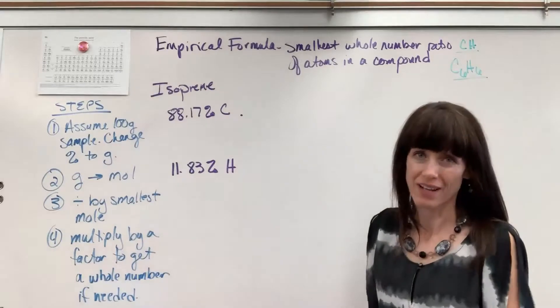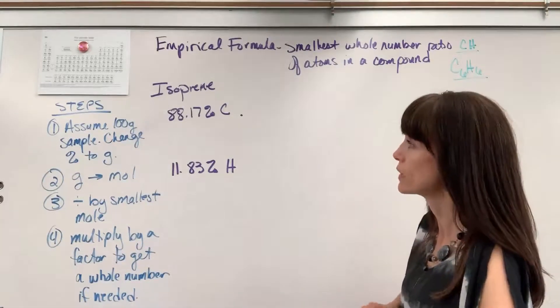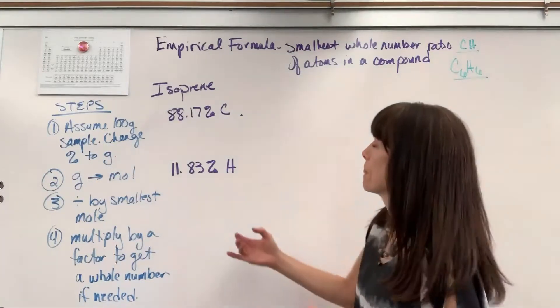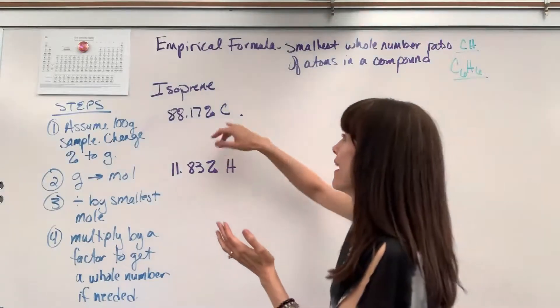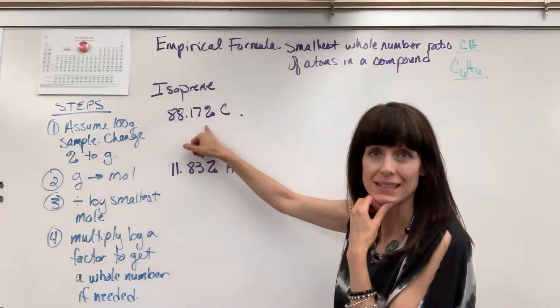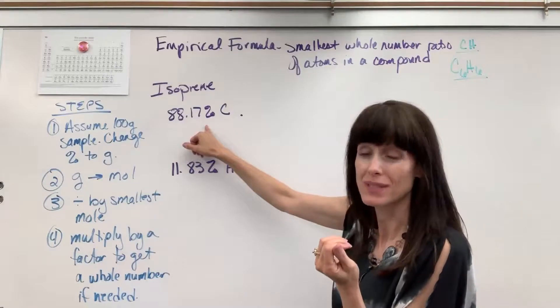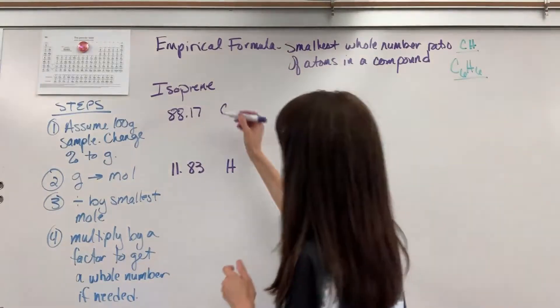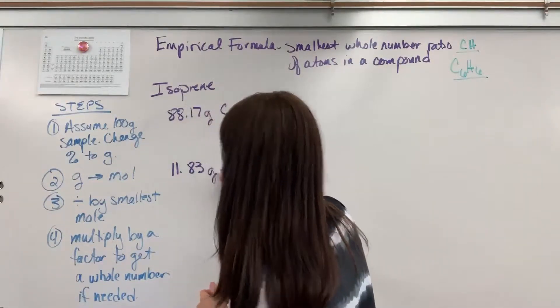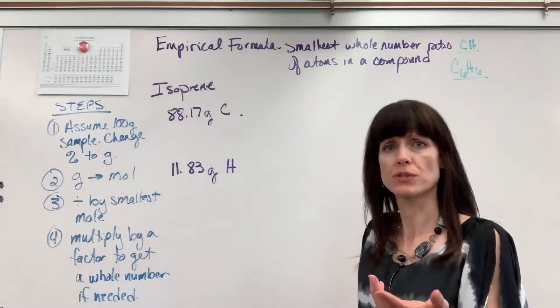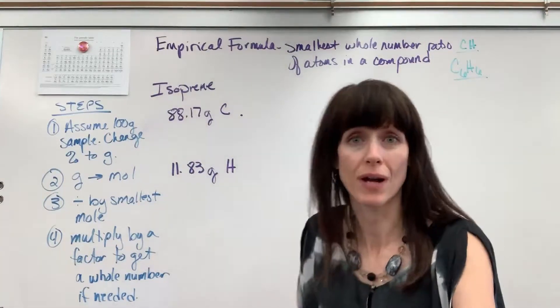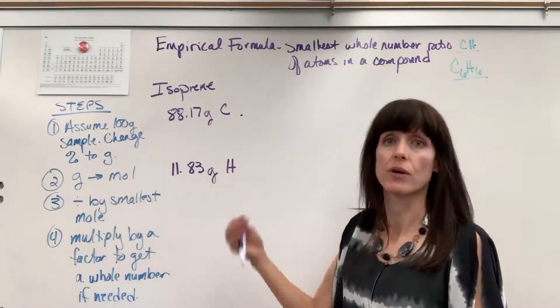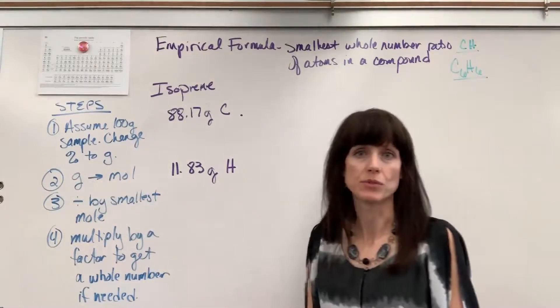Here's step number one to find the empirical formula. Number one, assume a 100-gram sample, so you simply change percent to gram. Now let me show you why. If I have a 100-gram sample and carbon is 88.17%, that means I have 88.17 grams. So it's just an easy trick. You can take percentages, assume a 100-gram sample, and just change that percent to a gram. Now sometimes this will throw students. You will have some problems where you're given grams. Great! Skip step one. They did something for you. If you're given grams, you're just going to go immediately to step two.